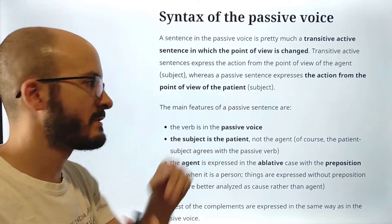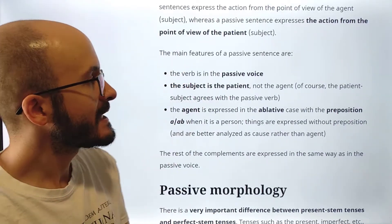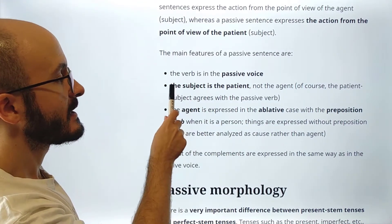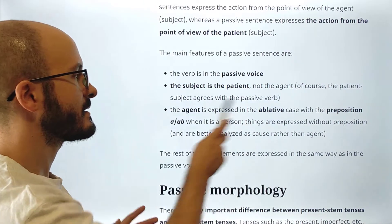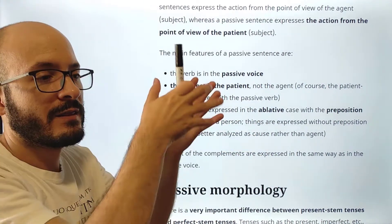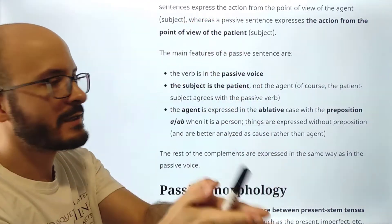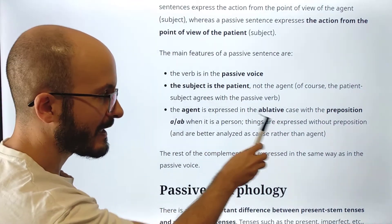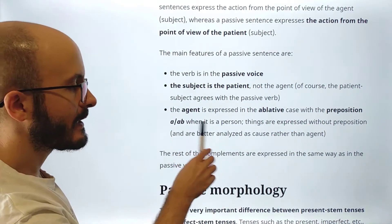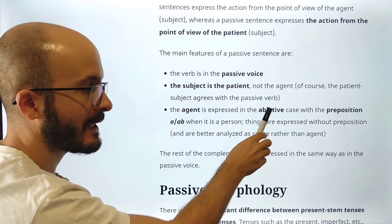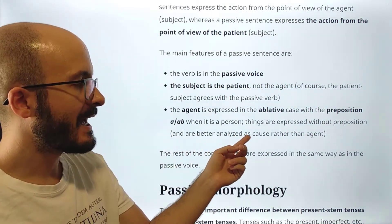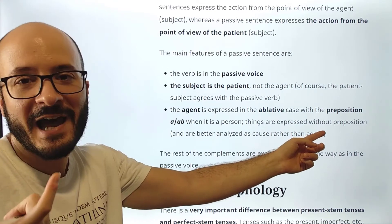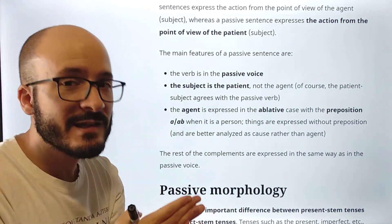That's a huge difference. The main features of a passive sentence are: the verb is in the passive voice; the subject is the patient, not the agent; the patient-subject agrees with the passive verb — subject always agrees with the verb, whether active or passive. The agent is expressed in the ablative case with the preposition 'a' or 'ab' when it is a person. Things are expressed without a preposition, and are better analyzed as cause rather than agent, because things don't have agency.